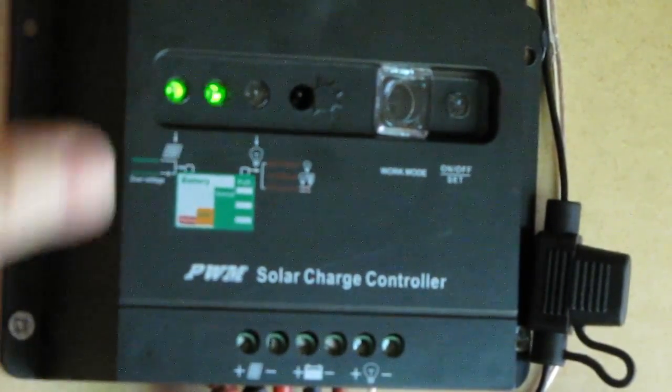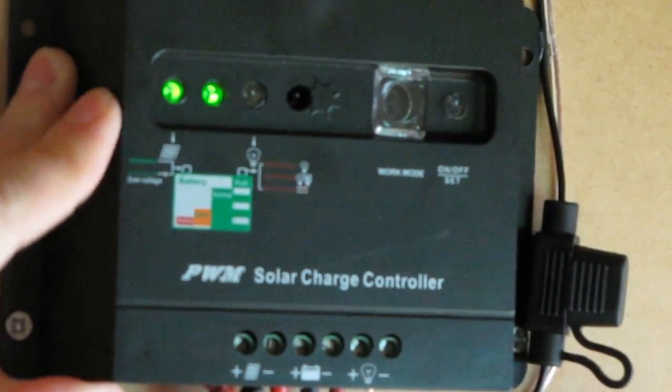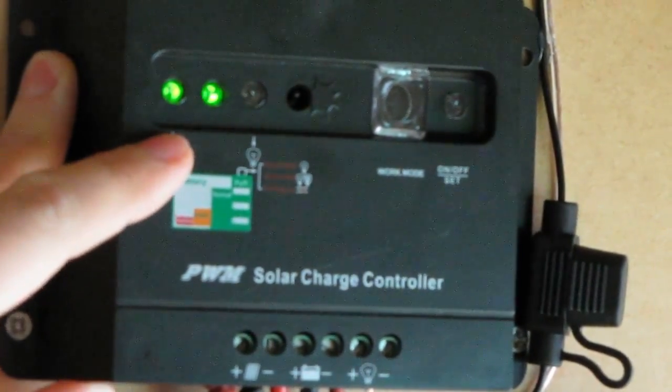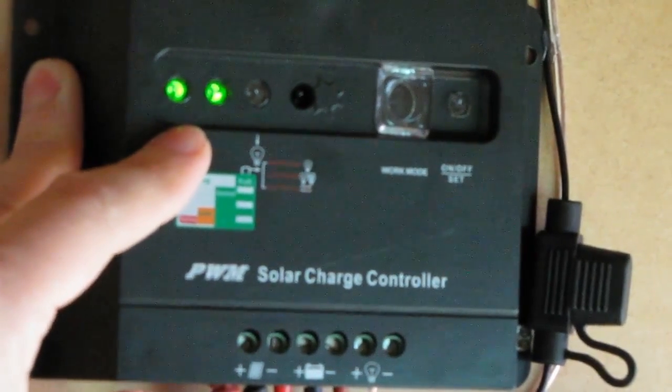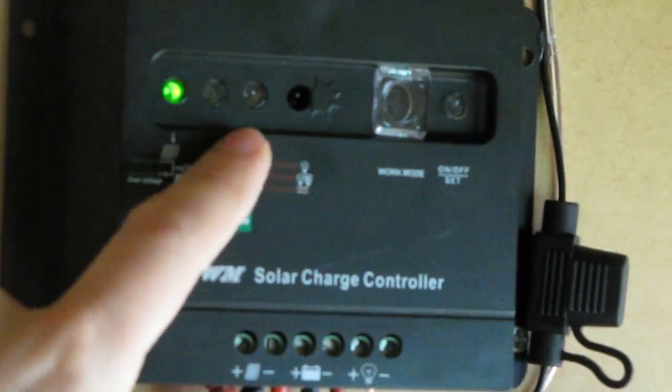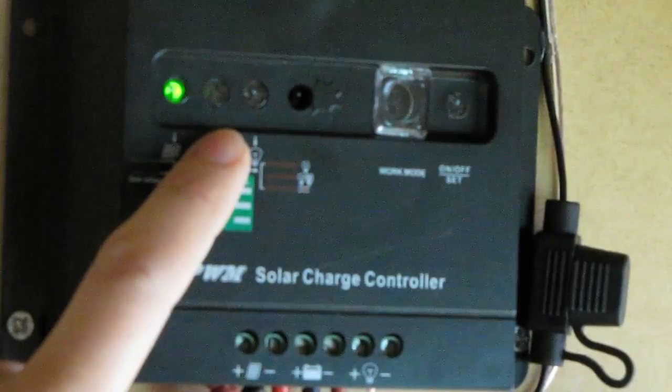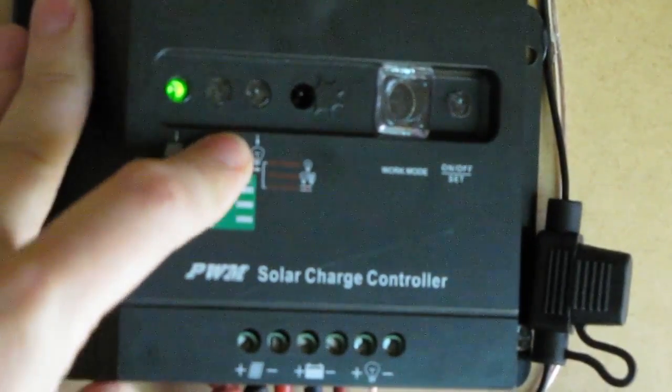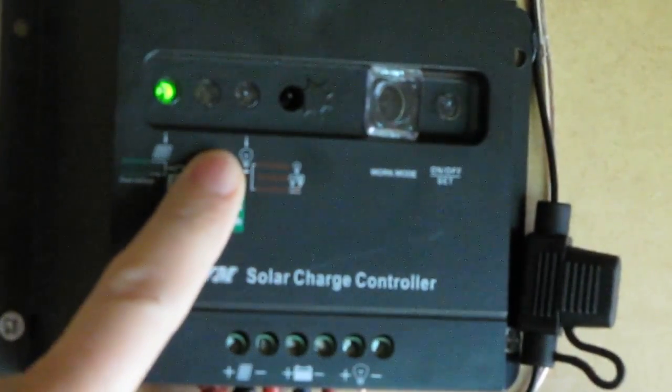And then when you connect the solar panels up, you should get a yellow light showing that solar power is being taken in. And then this flashing mode is when it's on float charge, I think. When it's just lit all the time, I think that's on bulk charge.